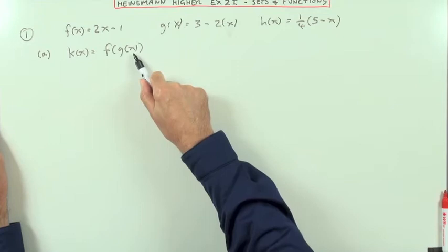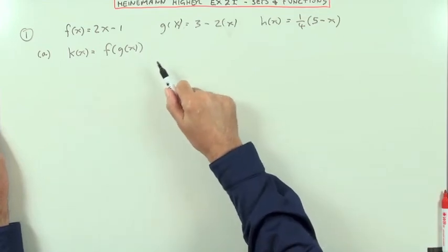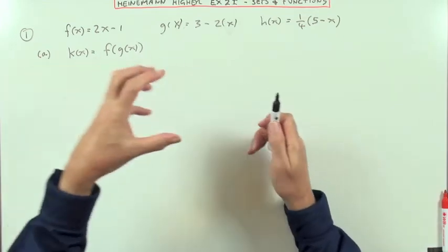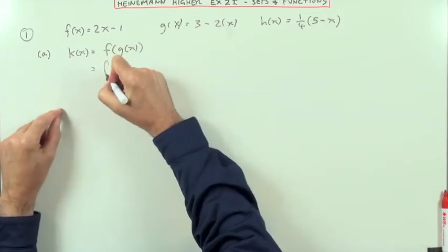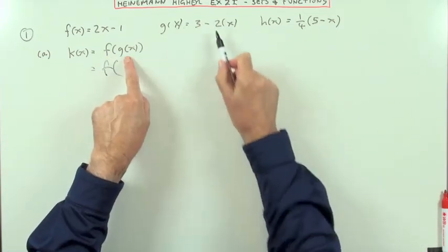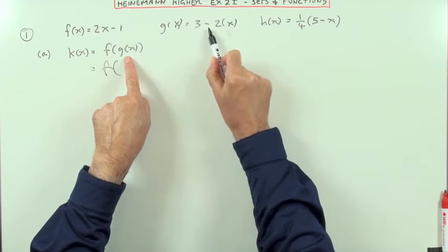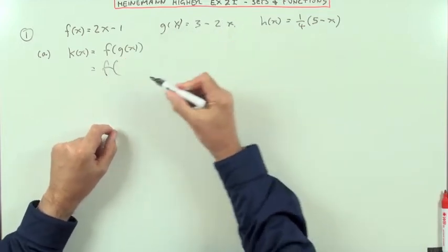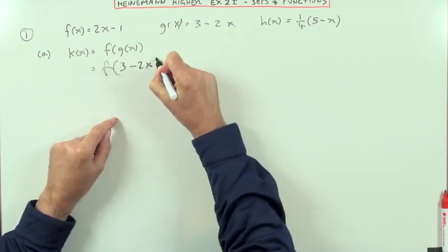You start with x, g acts on it, and whatever it produces, f comes along and acts on that afterwards. Well, it's easy to see what g does. Whatever you put into g, it does three minus two times it. So that'll be three minus two x.